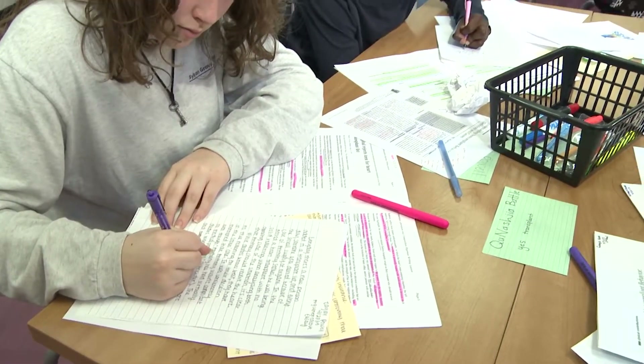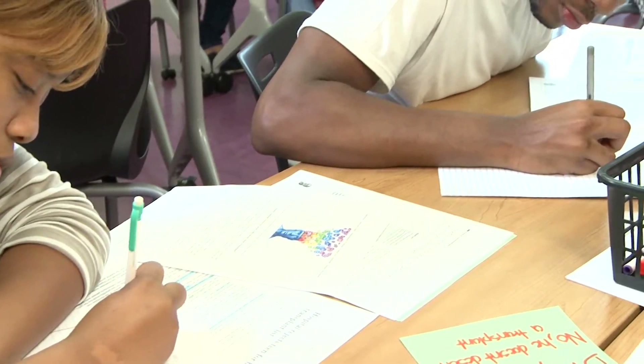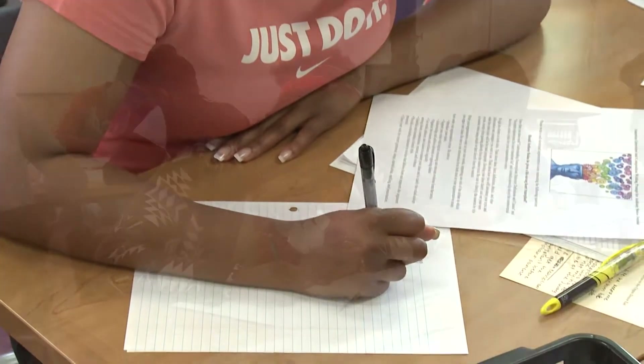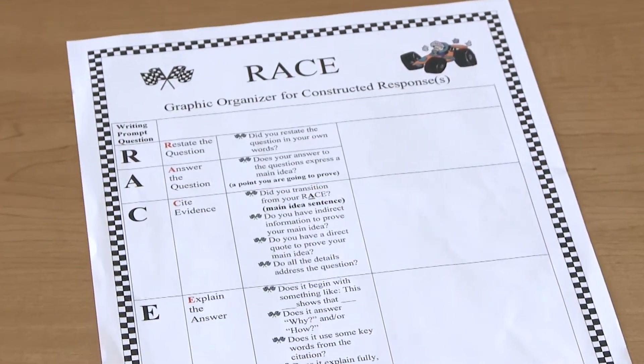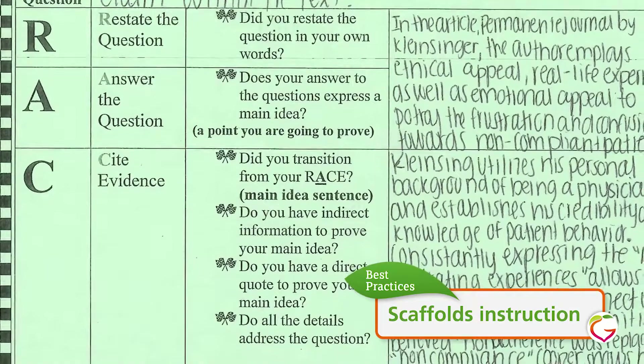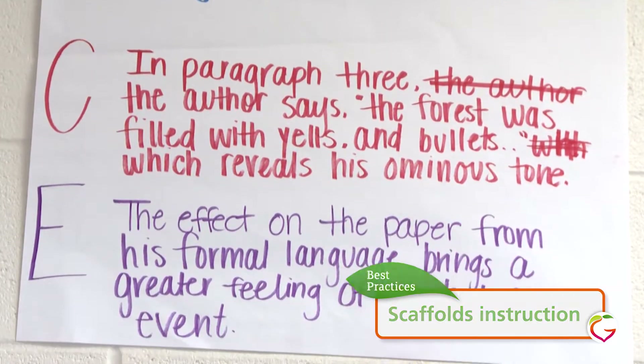When students are grappling with complex text and writing under time constraints, it's really important to give them strategies they can use — not a lockstep 'you have to do this every time,' but an entryway into formulating a response in a timely fashion. What we've used here is the RACE strategy: students Restate the question, provide an Answer, Cite specific evidence from the text, and give an Explanation or commentary for that evidence. I've found it very effective in having students give strong responses under time constraints.